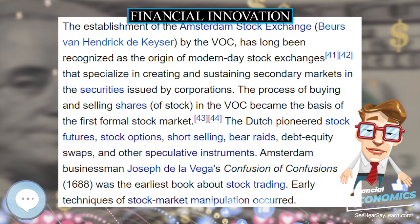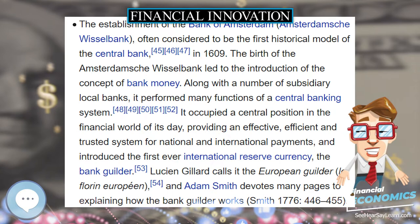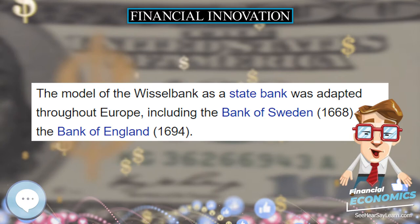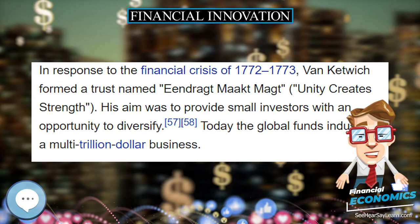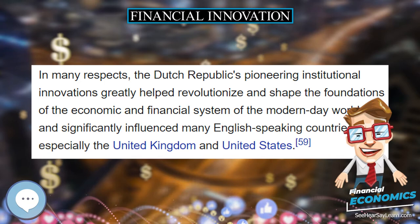If the world existed as the Arrow-Debreu model posits, then there would be no need for financial innovation. The model assumes that investors are able to purchase securities that pay off if and only if a certain state of the world occurs. Investors can then combine these securities to create portfolios that have whatever payoff they desire. The fundamental theorem of finance states that the price of assembling such a portfolio will be equal to its expected value under the appropriate risk-neutral measure.